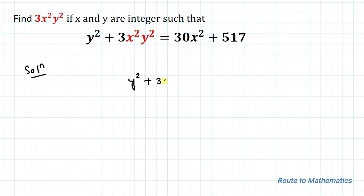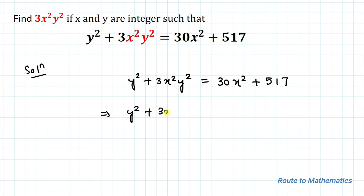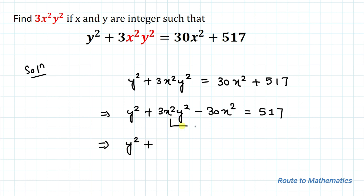So without any delay, let's start the solution. We have y² + 3x²y² = 30x² + 517. In the next step, let's take 30x² to the left-hand side, so we have y² + 3x²y² − 30x² = 517.